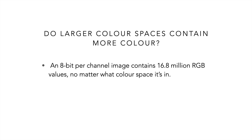An 8-bit image contains around 16.8 million RGB values in whatever colour space we choose — whether it's sRGB, ProPhoto RGB or Adobe RGB. However, the colour values are spread out further apart the bigger we go in colour space. So moving from Adobe RGB to ProPhoto RGB, being a bigger space, those colours in that space are just further apart.